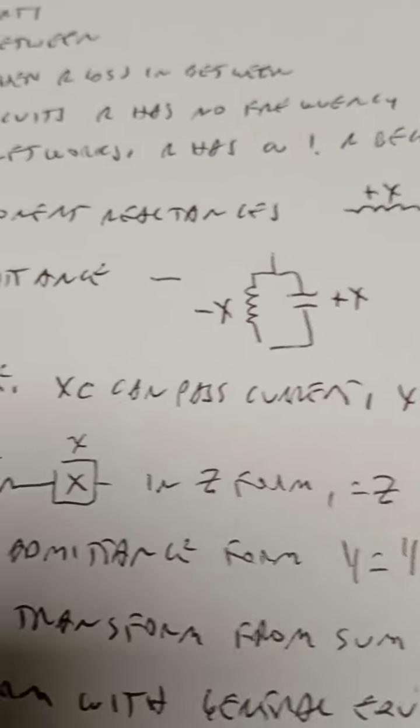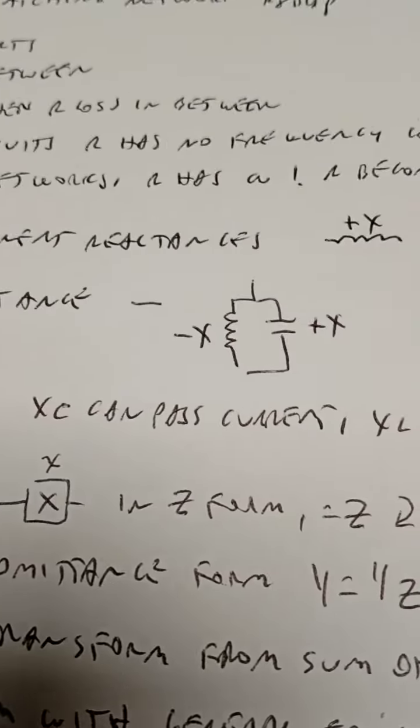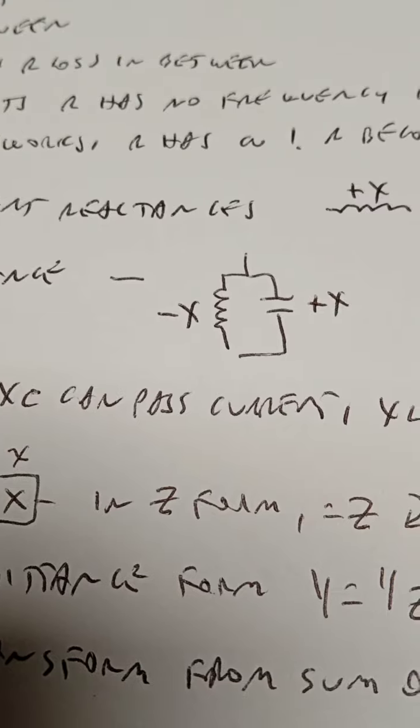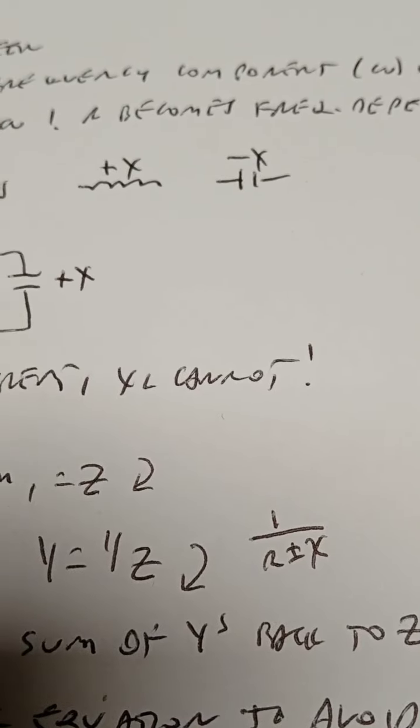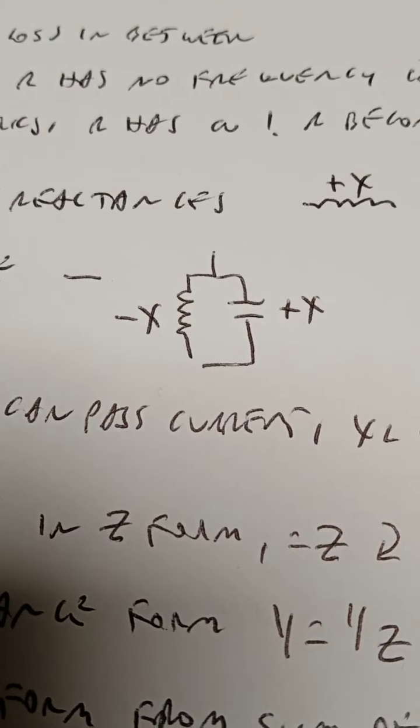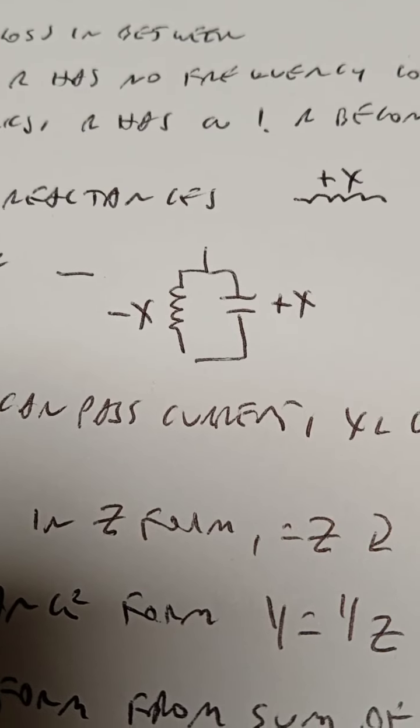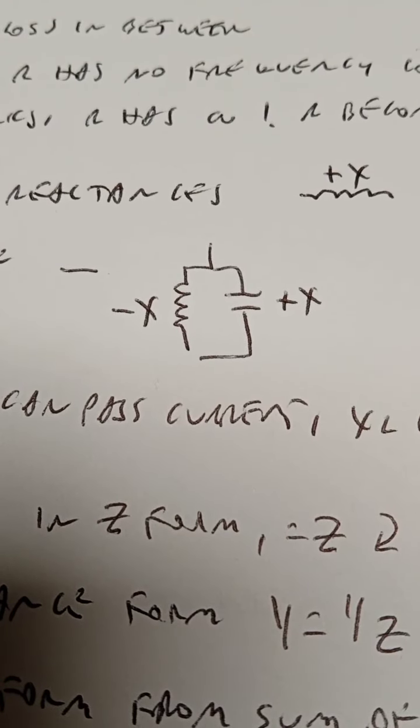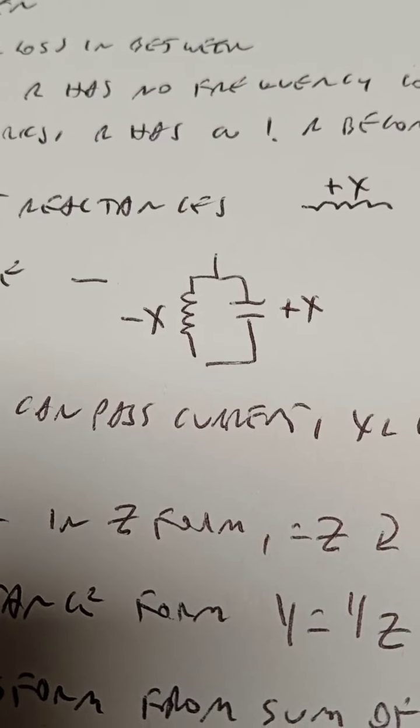That leads to the very strange observation that in the admittance form, a capacitive reactance can pass current and the inductive cannot. Normally we think of inductors passing DC current and capacitors never passing steady state current. In theory, that's reversed in the complex world. That can lead to some interesting observations.